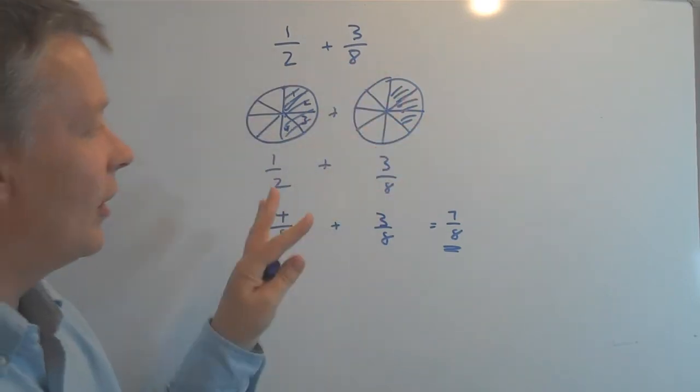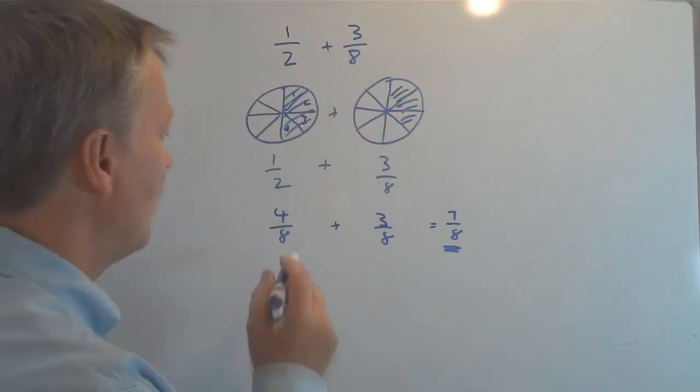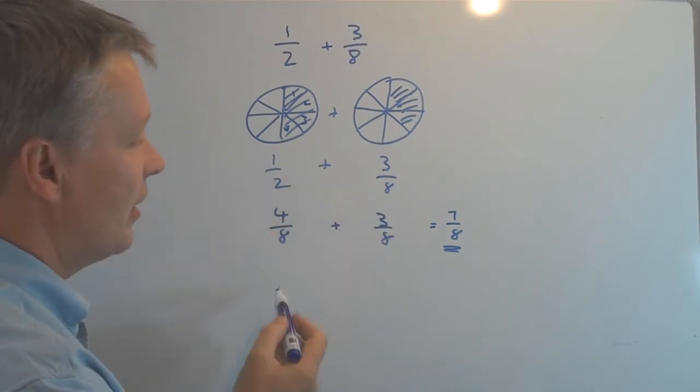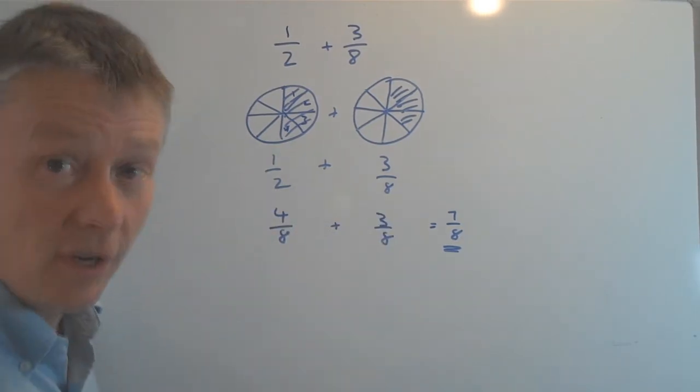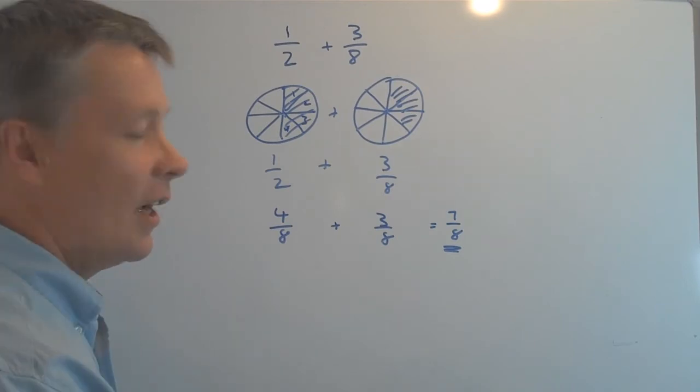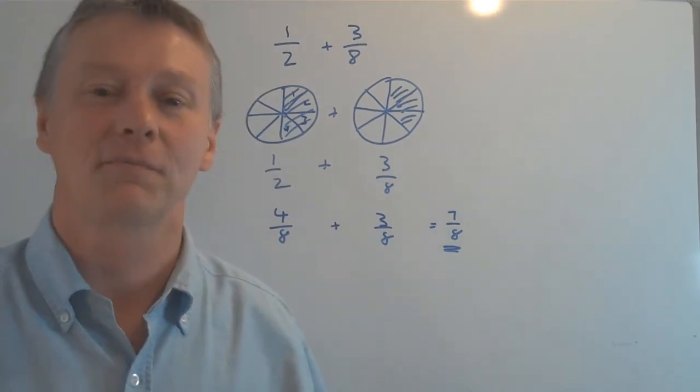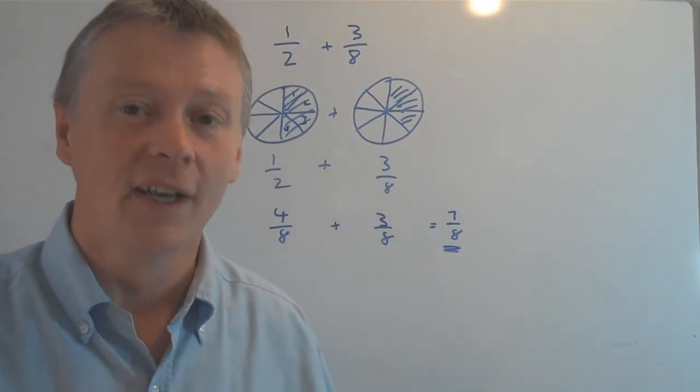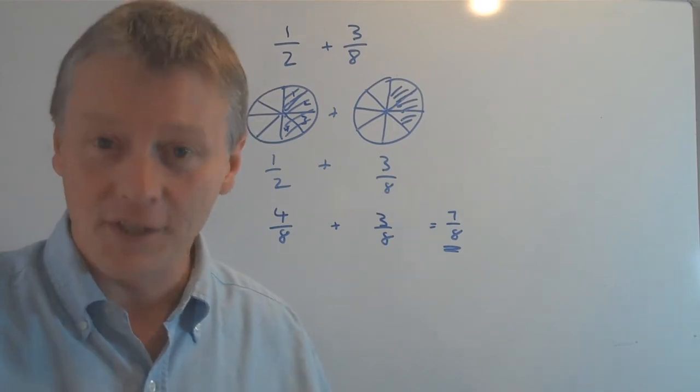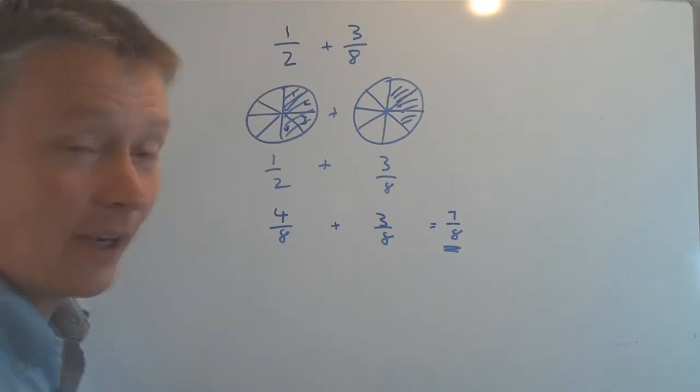So this whole idea is to make sure that these two numbers at the bottom, which is called the denominator, is the same. And the way I've done that is that rather than drawing diagrams, which you can draw diagrams if you want to, and it does make sometimes the maths a little bit clearer and a little bit easier to understand. So please do draw diagrams. They are very helpful.